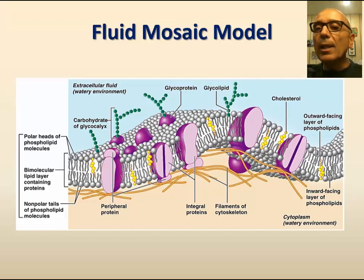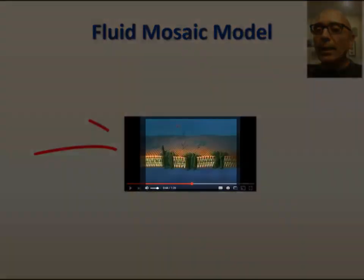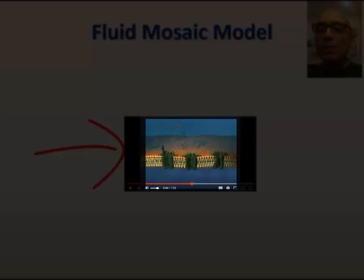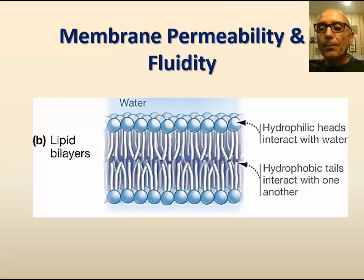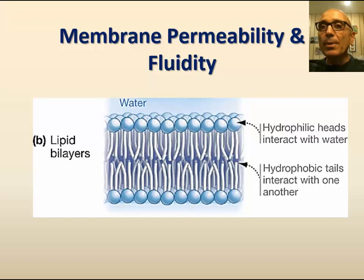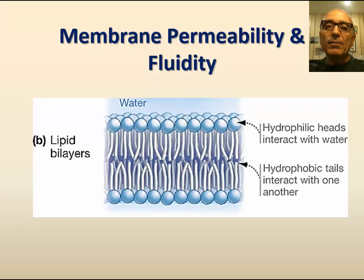To see a cool animation of the fluid mosaic model, click on the link here. When you're done viewing, continue watching this video. Cell membranes are selectively permeable. Some solutes cross the membrane freely, some cross with assistance, while others do not cross at all. Several factors affect membrane permeability and, by extension, its fluidity.